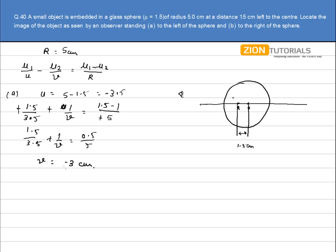So the minus sign shows that image is formed over here. And minus 3, that is distance from this very point. So this distance is 3. So from the center the distance will be 5 minus 3, that is 2 cm.